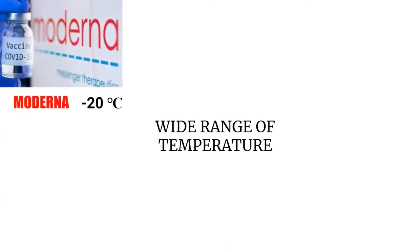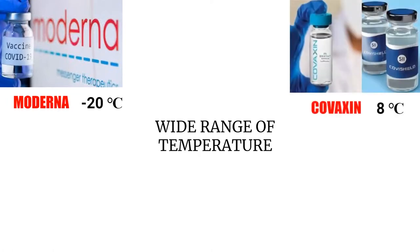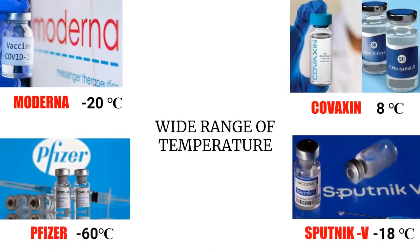Yeah, of course. Some vaccines like Moderna need to be kept at a temperature of minus 20 degrees Celsius. While some like Covaxin at 8 degrees Celsius. But Pfizer, it requires a temperature of minus 60 degrees Celsius. So it looks like a big challenge. Yeah, it's a pretty low temperature.